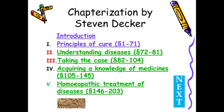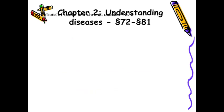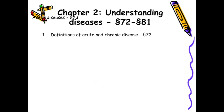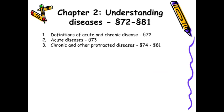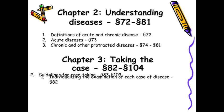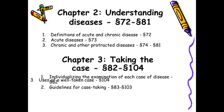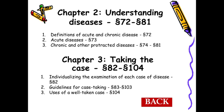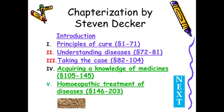Then we go to understanding diseases: definition of acute and chronic disease — acute disease, chronic and protracted disease — then case taking: individualizing the examination of each case of disease. Then guidelines for case taking and uses of a well-taken case. We have sessions on case taking where these points will be covered in further detail. Under chapter 3 it is 'taking the case.'